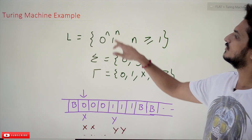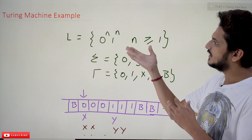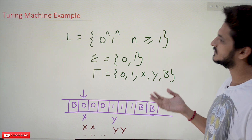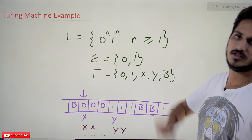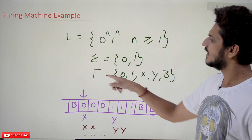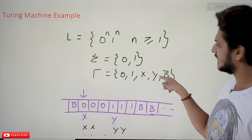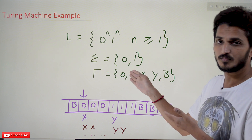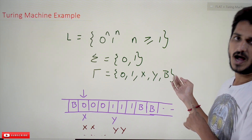Coming to today's example: the language L is equal to 0^n 1^n, where n is greater than or equal to 0. We used this language many times in our previous classes when we discussed context-free grammar. Now Sigma (input symbols) = {0, 1}, and the tape symbols tau include input symbols along with X, Y, and one extra blank symbol. We place X in place of 0 and Y in place of 1.